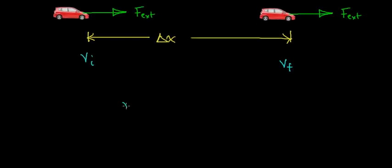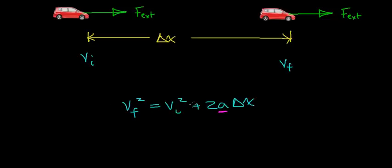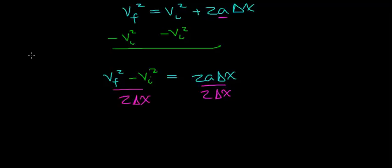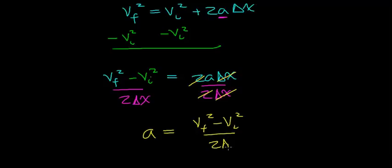To find how much this force increases the velocity of the car, we go back to kinematics. The relationship is: the final velocity squared equals the initial velocity squared plus two times the acceleration times the distance. Subtracting the initial velocity squared from both sides gives: vf² − vi² = 2·a·Δx. Dividing both sides by 2·Δx, the 2s and delta x terms cancel, giving us the acceleration in terms of final velocity, initial velocity, and the distance over which the force acts.